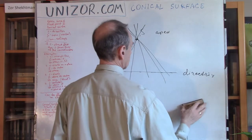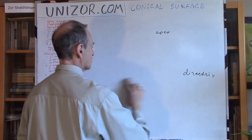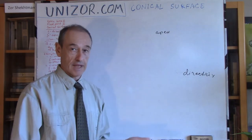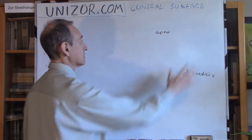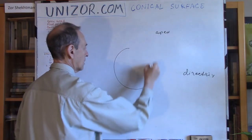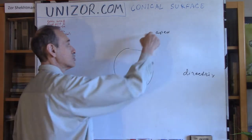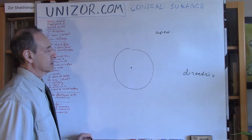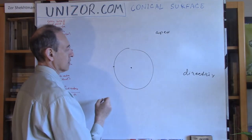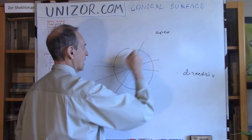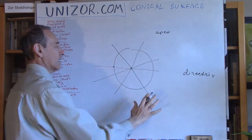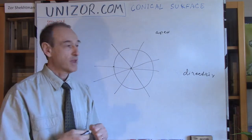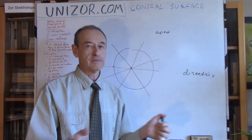Another example, also kind of strange, but nevertheless: let's assume our directrix is a flat circle lying on some plane, and the apex is right in the middle of that circle — in the same plane. If we connect each point on the circle with its center, the set of all these lines will again be this particular plane where the circle belongs to. So again, the plane would be a conical surface. These two cases are not really typical and we will never return to them — I just wanted to present them as a little unusual examples of conical surfaces.